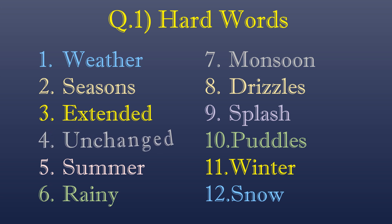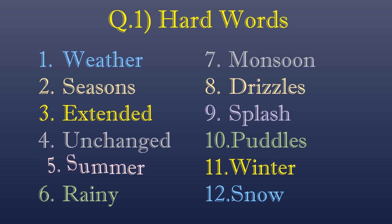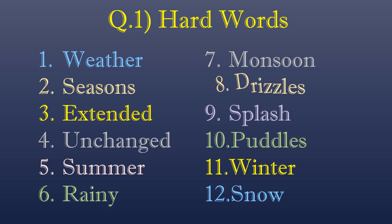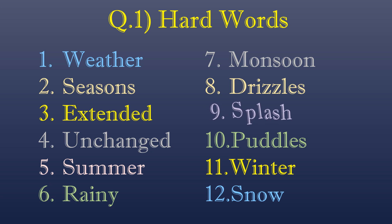Number five: S-U-M-M-E-R, summer. Number six: R-A-I-N-Y, rainy. Number seven: M-O-N-S-O-O-N, monsoon. Number eight: D-R-I-Z-Z-L-E-S, drizzles. Number nine: S-P-L-A-S-H, splash.